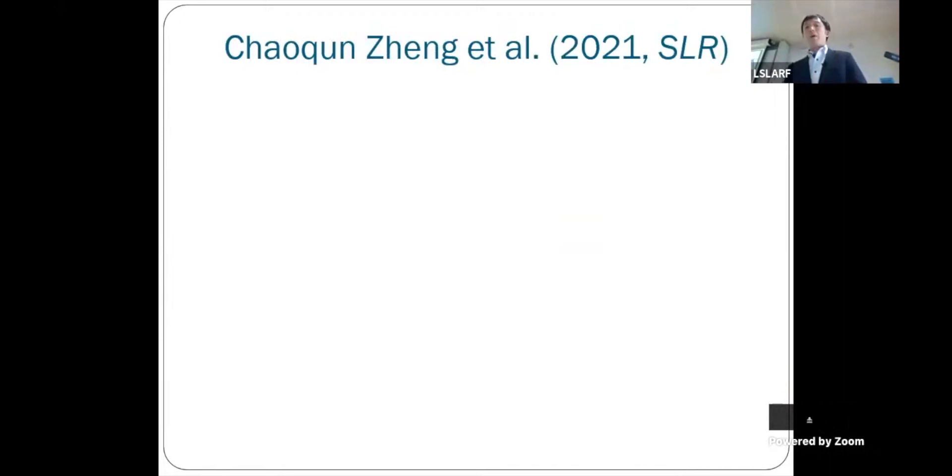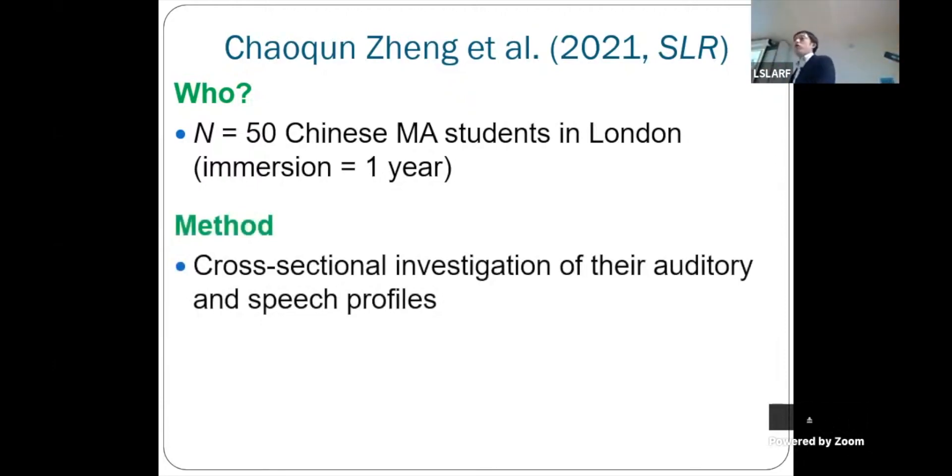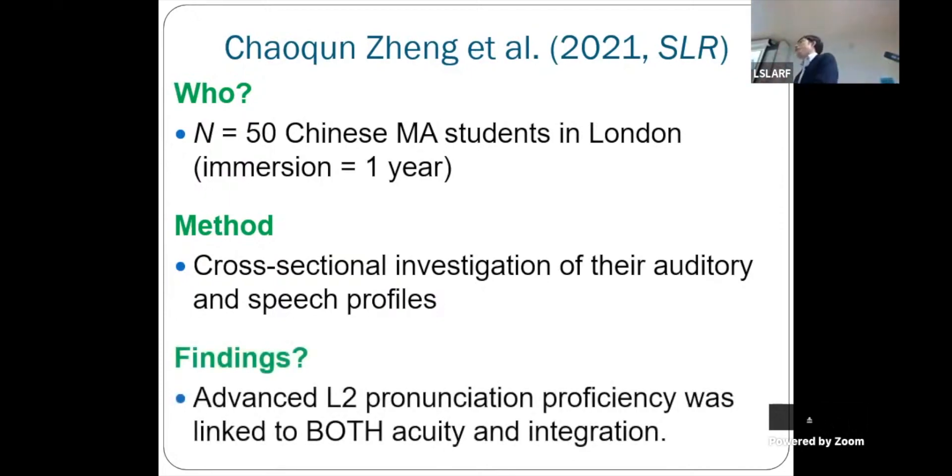Finally, I want to introduce Chaoqun Zheng's project from 2021, published in Second Language Research. She had 50 Chinese MA students in London. Her interest was those who had been studying abroad in London for one year. She did a cross-sectional analysis, checked their pronunciation. Obviously the pronunciation was very different. Some were really native-like, others still showed a lot of foreign accents. The findings showed that the instance of advanced second language pronunciation proficiency among these participants was linked to both acuity and integration.